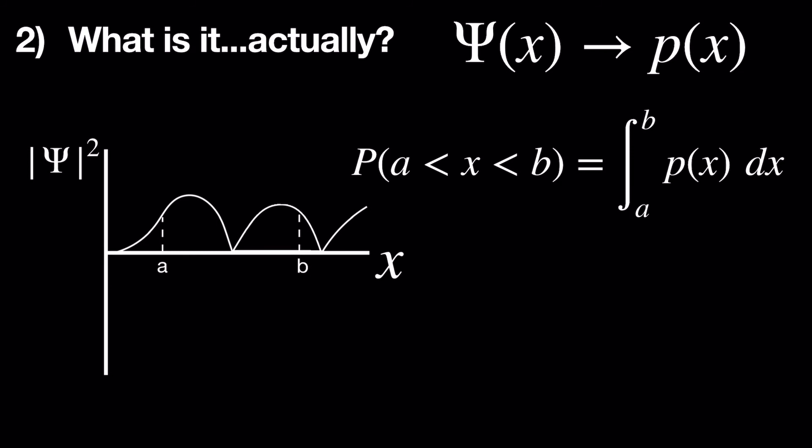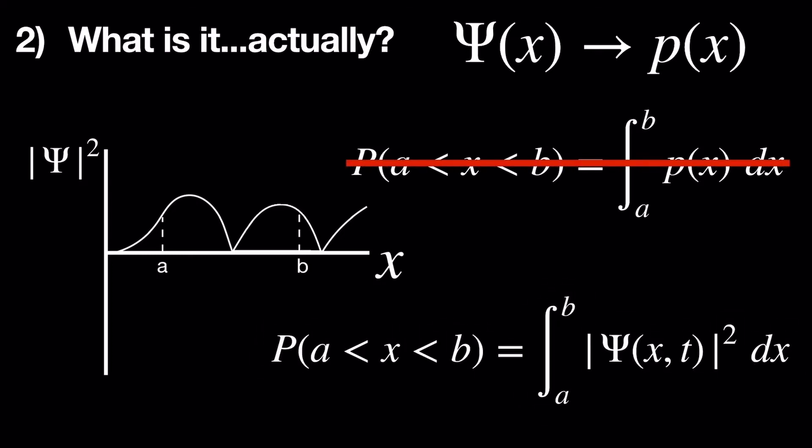In order to find the probability of finding some particle between two points in one dimensional space at a specific point in time, you find the area of the curve of the magnitude of the wave function squared over that range.